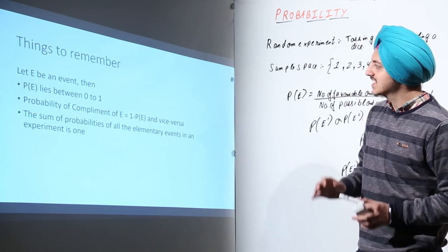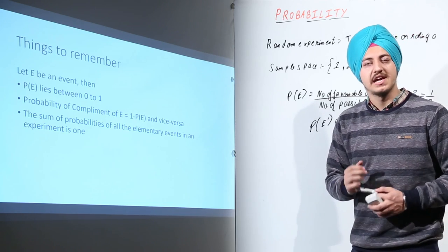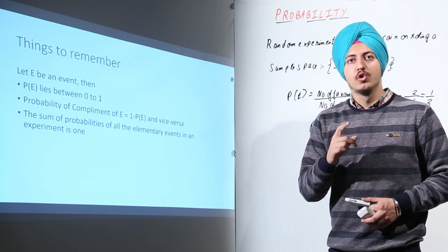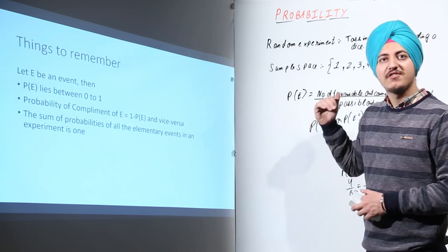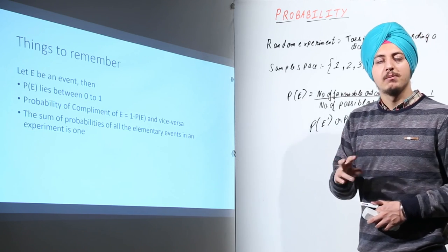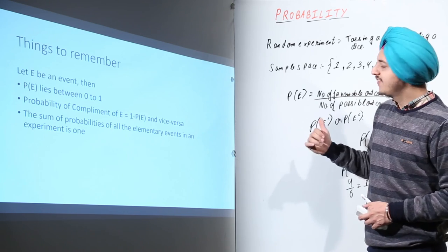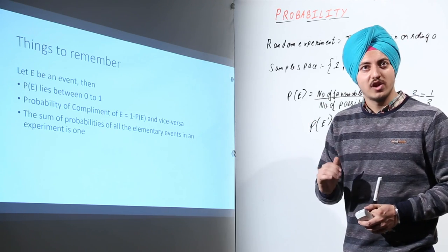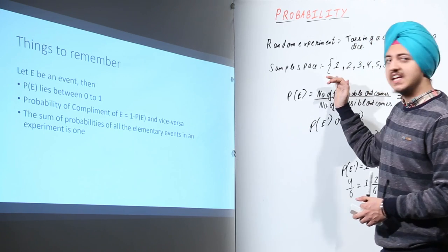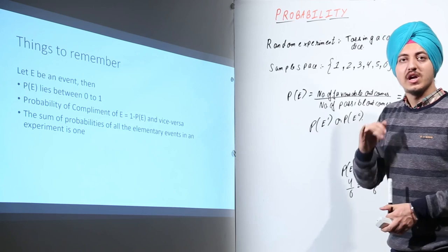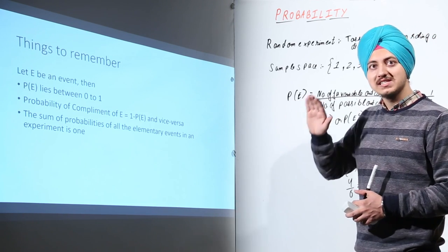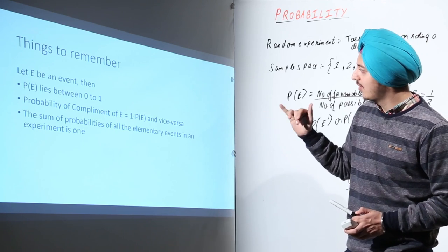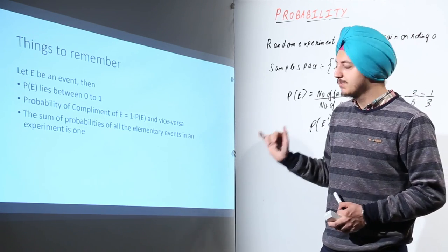The last property states that the sum of all the probabilities of elementary events in an experiment is 1. For example, in rolling a dice, the probability of getting each individual number is 1/6. Since there are 6 such elementary events, adding them — 1/6 + 1/6 + 1/6 + 1/6 + 1/6 + 1/6 — gives 1. So the sum of probabilities of all elementary events in a random experiment is always 1.